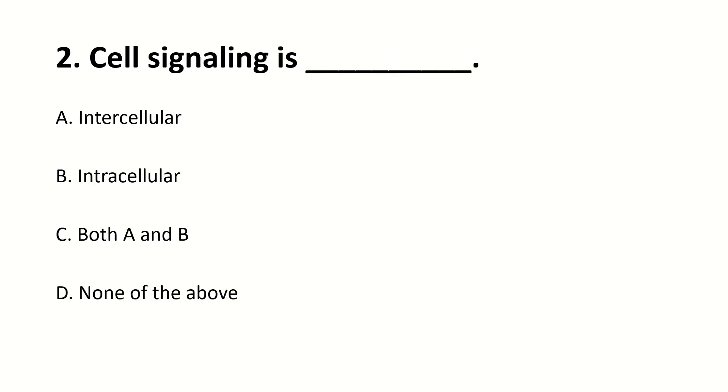Cell signaling is dash. Right answer is C — both A and B — whether intracellular and extracellular.